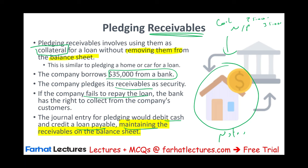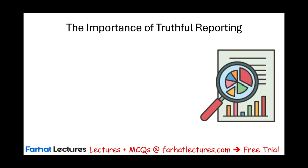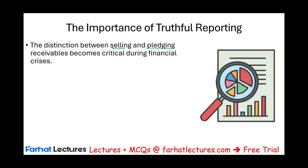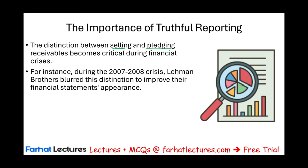In pledging, you keep the receivable. In selling - in factoring - you remove the receivable. Two different things. In both situations, you are using the receivable to raise money for the business. Now why is this distinction important? This is important because during the financial crisis of 2007-2008, companies utilized this strategy to manipulate their books - specifically a company named Lehman Brothers. The distinction between selling a receivable and pledging a receivable is critical. During the 2007-2008 crisis, Lehman Brothers blurred this distinction to improve their financial statement position.